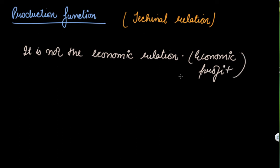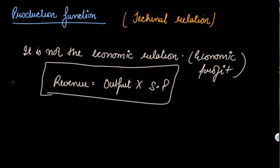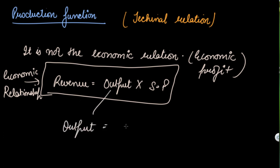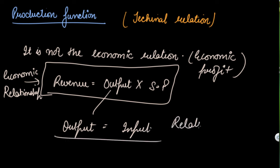Profit and revenue are economic concepts — you can calculate revenue by multiplying your outputs by your selling price. That is an economic relationship. But your production function just tells the relationship between output and input, like you made 50 t-shirts using 10 labor hours and 20,000 of investment. It is just telling you how much output you got from your inputs. It is not giving you any kind of economic relationship, so production function is only a technical or functional relationship, not an economic relationship.